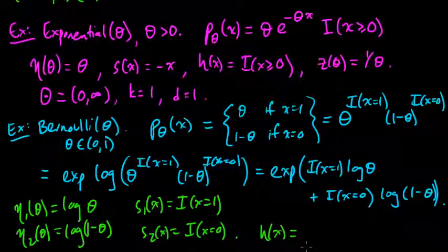And if we take this, log of the product is the sum of the logs. So this is indicator x equals 1 times log theta, plus indicator x equals 0 times log 1 minus theta. So here, now we have, at least this way, the way I did it just now, let's switch colors, we have